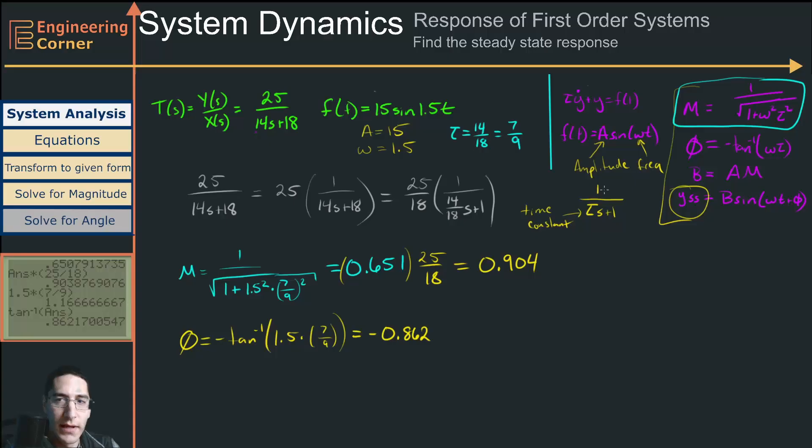Now, the next step is to multiply our magnitude by our amplitude of our input. So we call that B. So B is going to be equal to 15 times 0.904. And we get this B value of 13.56.